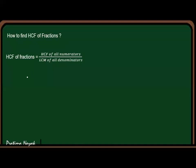So I am taking one example. Suppose A by B and C by D. These are two fractions whose HCF we have to find out. It will be HCF of all numerators, that means A and C, and LCM of all denominators. So this is the concept.